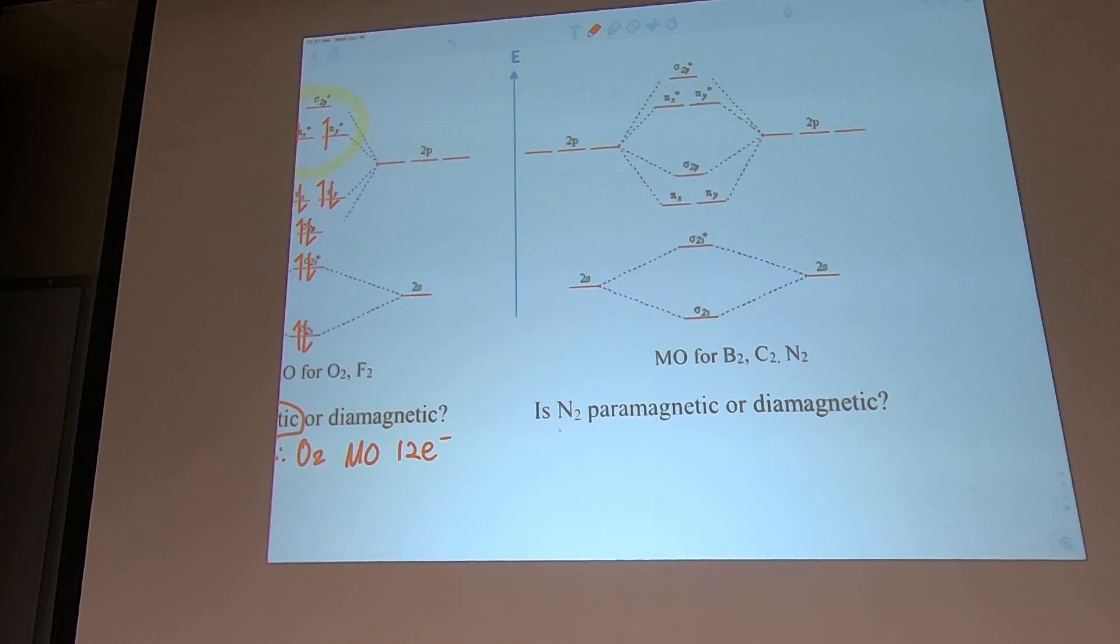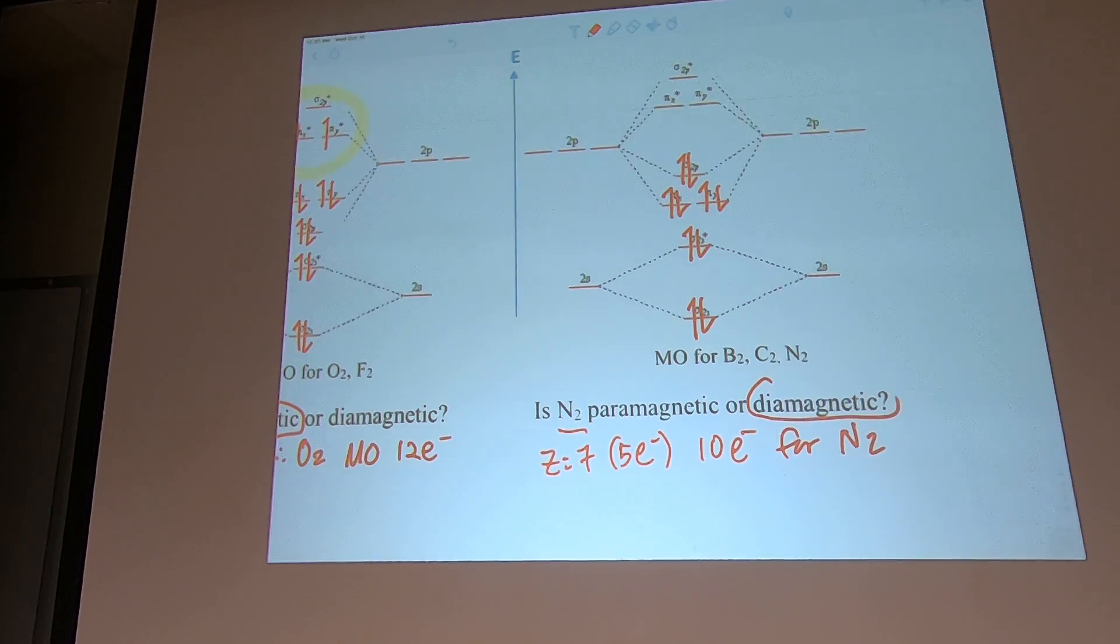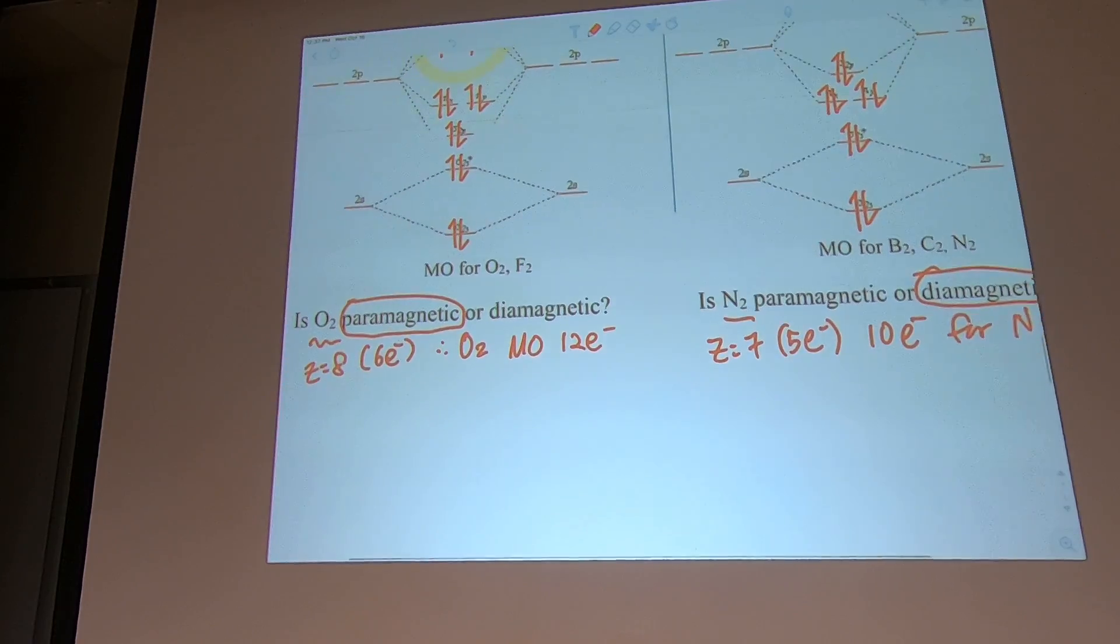What about nitrogen? Nitrogen Z is 7, but what matters is 5 electrons in the valence shell, so 10 electrons for N2. 1, 2, 3, 4, 5, 6, 7, 8, 9, 10. Overall I don't have any unpaired electrons - everything is paired. So this one is diamagnetic.